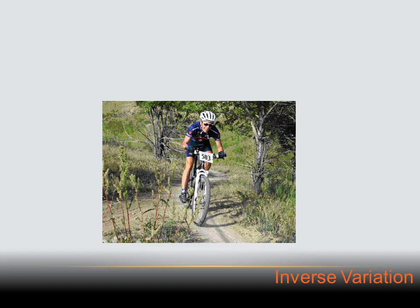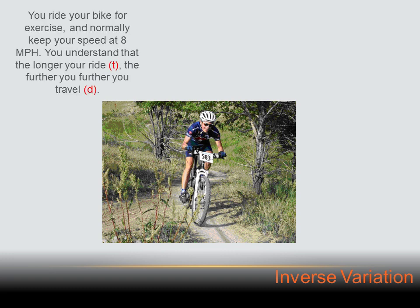We're going to use biking to explain the difference between direct and inverse variation. We talked about direct variation in the last lesson. Here's a direct variation problem: you ride your bike for exercise and normally keep your speed at eight miles per hour. You understand that the longer you ride, the further you travel.